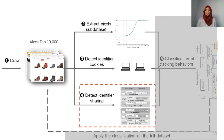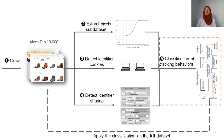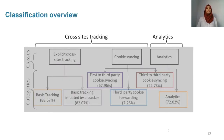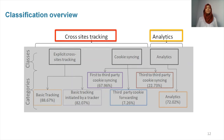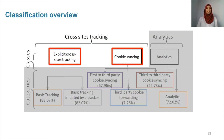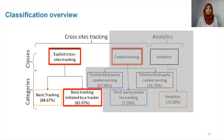Using the detection of identifier sharing inside the pixels sub-dataset, we made a classification of different tracking behaviors, and then applied it to the full dataset independently from what kind of content is served. We first split our tracking categories into cross-site tracking and analytics because of their different privacy impact. Cross-site tracking enables the recreation of part of the user's browsing history, while analytics enables tracking within the same website, which is less harmful for the user's privacy. In this talk, I will focus on cross-site tracking. We split it into two main classes: explicit cross-site tracking, where trackers rely on third-party cookies, and cookie syncing, which relies on the sharing of identifiers. Today I will present what we refer to as basic tracking initiated by a tracker, which is present on over 82% of the websites we visited.